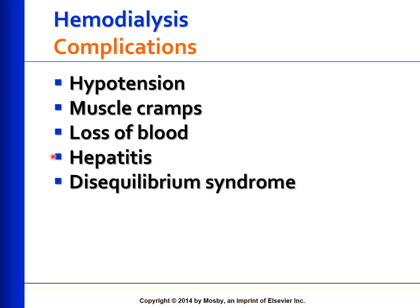Disequilibrium syndrome occurs during or soon after hemodialysis. Rapid decrease in fluid volume and BUN levels causes this. The change in urea levels can cause cerebral edema and increased intracranial pressure. Neurological symptoms can result, including headache, nausea, vomiting, restlessness, decreased level of consciousness, seizures, coma, or death. This can be prevented by starting hemodialysis for short periods with low blood flow so that rapid changes in plasma composition are avoided. For severe cases, early recognition and treatment with anticonvulsants and barbiturates, and slow infusion of about 250 cc of normal saline, may be given.